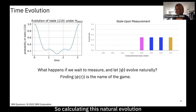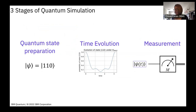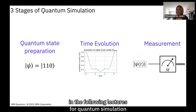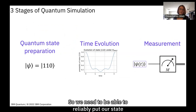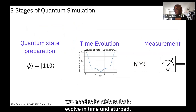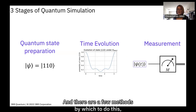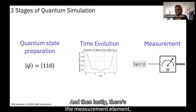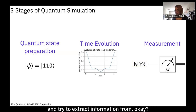Calculating the natural time evolution of a quantum state is the name of the game — and that's where quantum computers and quantum simulation come in. The three main stages of quantum simulation are: first, state preparation — reliably placing the system in a specific state; second, time evolution — letting it evolve undisturbed; and third, measurement — collapsing the state to classical 0s and 1s and extracting information.